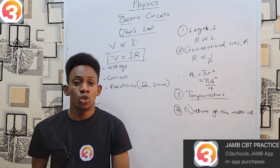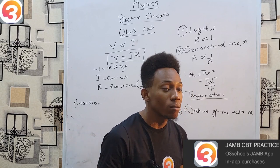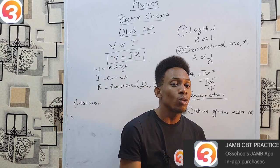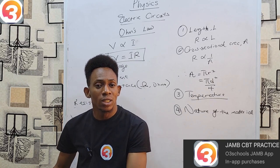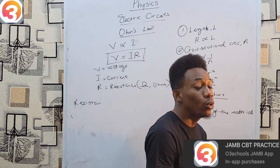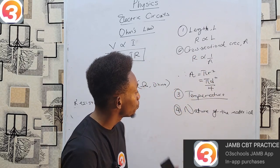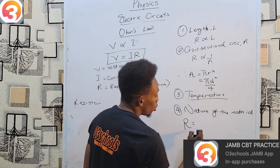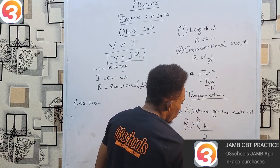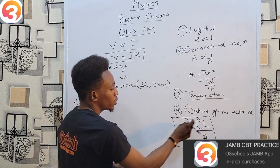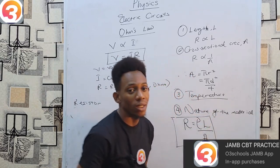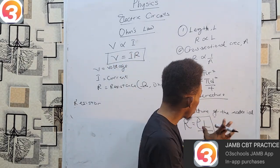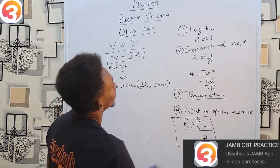Conductors let electricity pass through easily, while insulators do not. Importantly, insulators do eventually let electricity pass through — it is just not easy and requires a very high voltage. They should not be confused with non-conductors, which implies electricity can never pass through. Combining all four factors into one formula: R = ρL/A, where ρ (resistivity) depends on the nature of the material, L is the length, and A is the cross-sectional area.